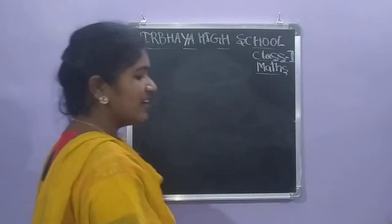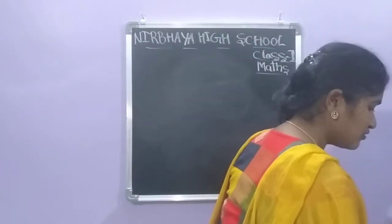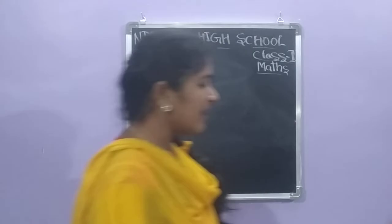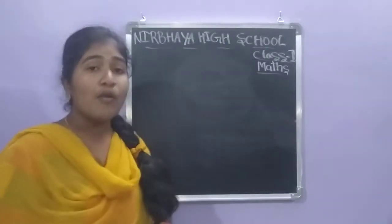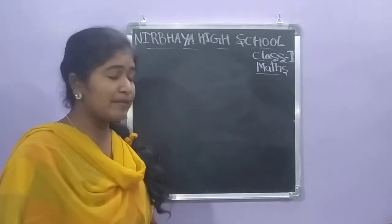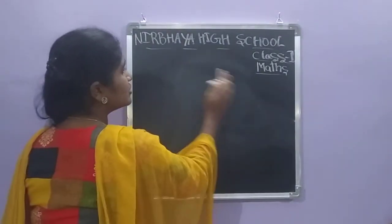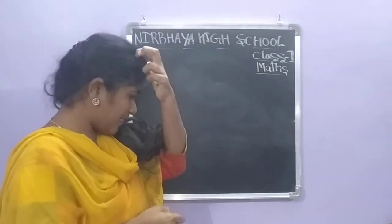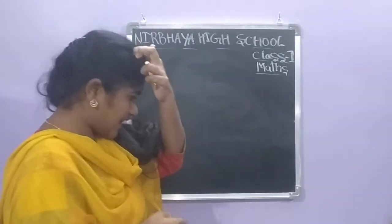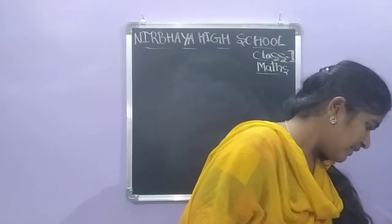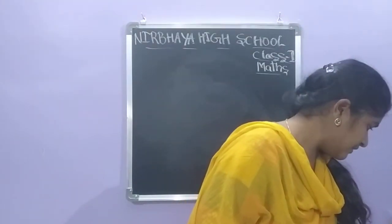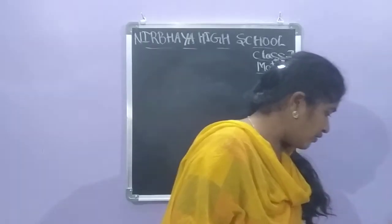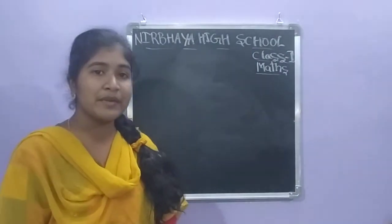Okay children, have you understood? Next, how should we add mentally? We should add two one-digit numbers. How should we add two one-digit numbers? First we should know how to add numbers mentally.